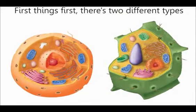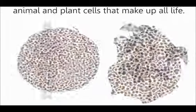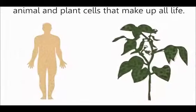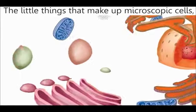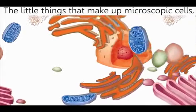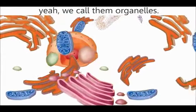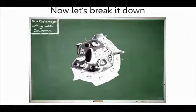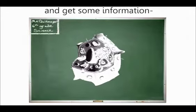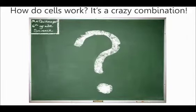First things first, there's two different types: animal and plant cells that make up all life. The little things that make up microscopic cells — the main structures — we call them organelles. Now let's break it down and get some information. How do cells work? It's a crazy combination.